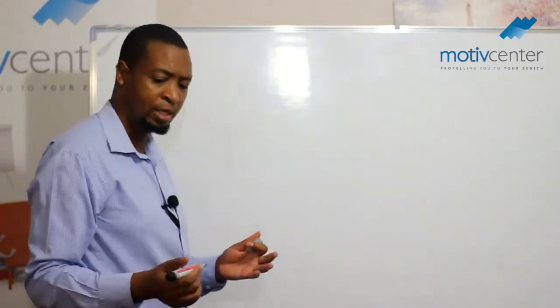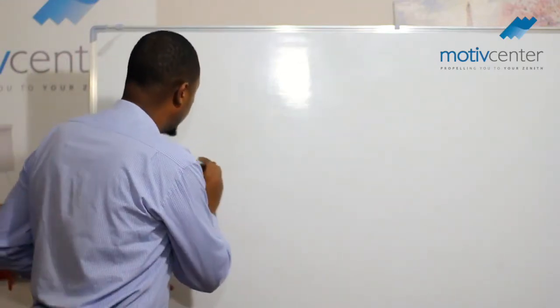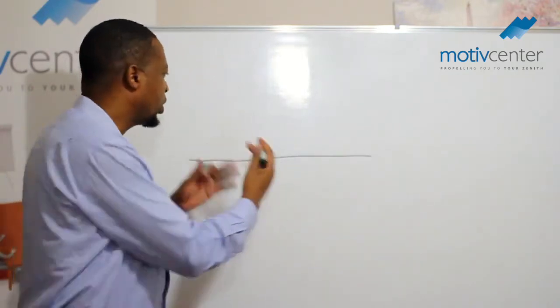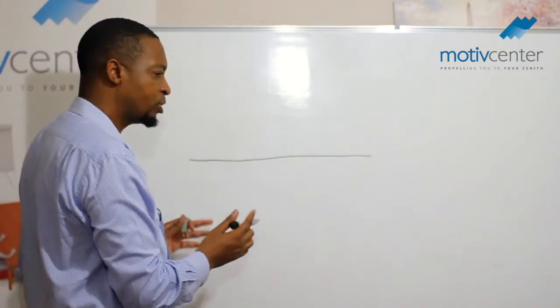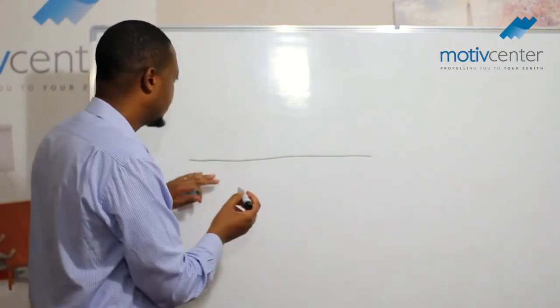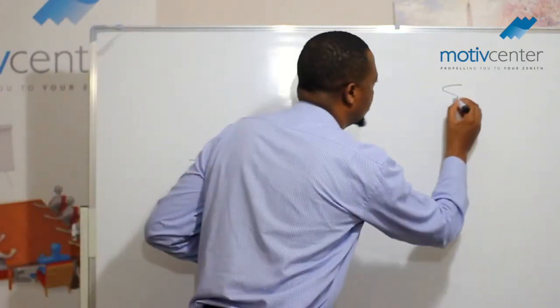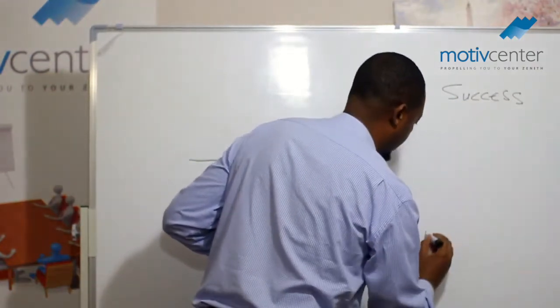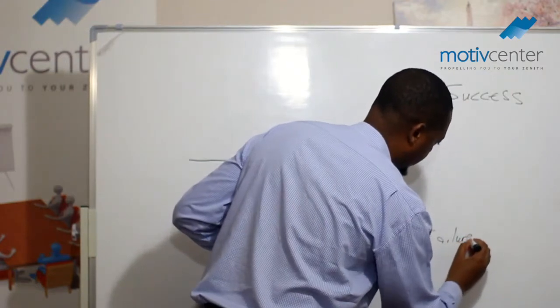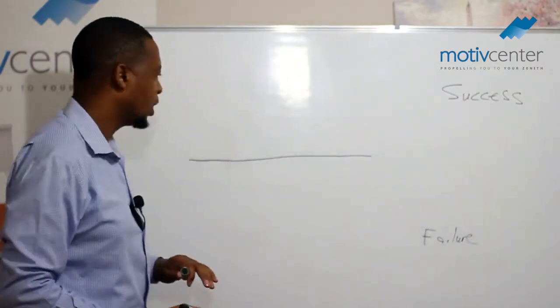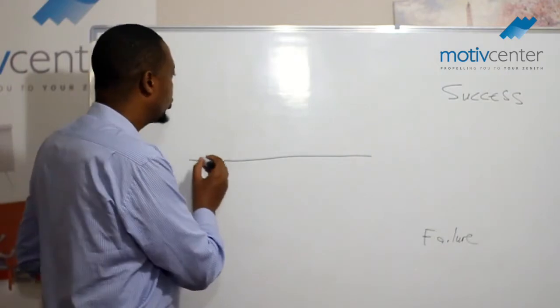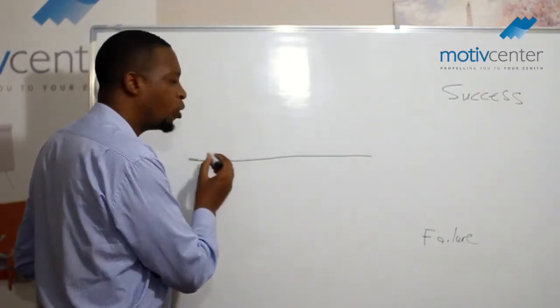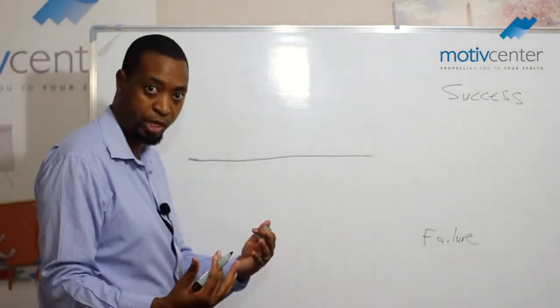When we start out in life, this is your philosophy, this is your concept, this is the way that you view life. So when we start out in life, this is us and this is success. And this is failure. So as we start out, you realize that we start out, most of the terms are almost the same. Let's take an example of school when we are still in school.